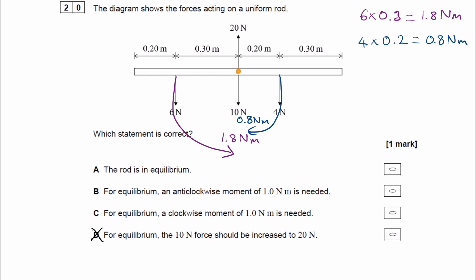So overall, if we find the difference between the two things, so we do 1.8 minus 0.8, that gives us 1. So at the moment, there is a resultant anticlockwise moment of 1 Newton meter. So to bring the system into equilibrium, we need a clockwise moment of 1 Newton meter. So the answer will therefore be C.